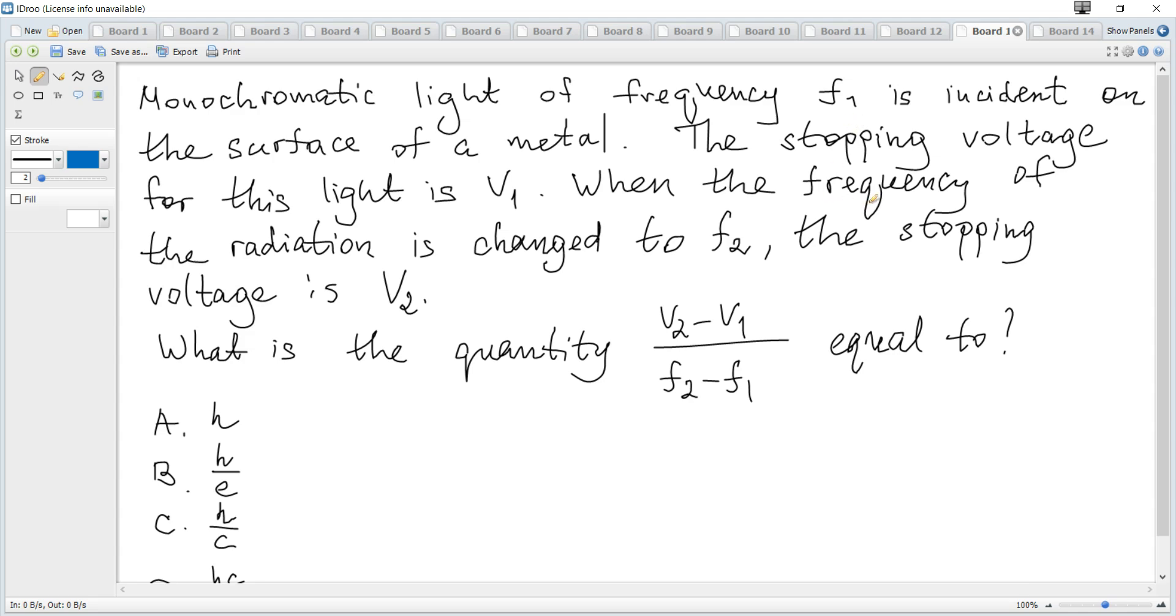Monochromatic light of frequency f1 is incident on the surface of a metal. The stopping voltage for this light is V1. When the frequency of the radiation is changed to f2, the stopping voltage is V2. What is the quantity (V2 - V1)/(f2 - f1) equal to?